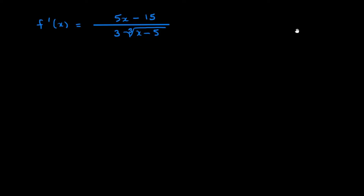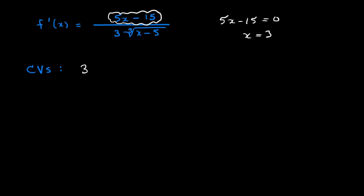Let's look at that derivative and find critical values. How can we make this derivative equal to zero? That means examining the numerator. If you want to solve five x minus 15 equals zero, you add 15 to both sides and divide by five to get x equals 3. That's our first critical value — it made our first derivative zero, so we have a stationary point at x equals 3 because that's a horizontal tangent.